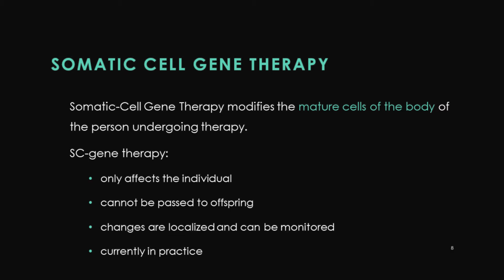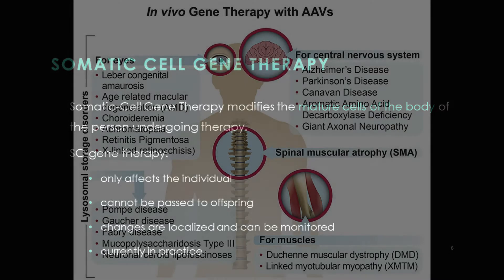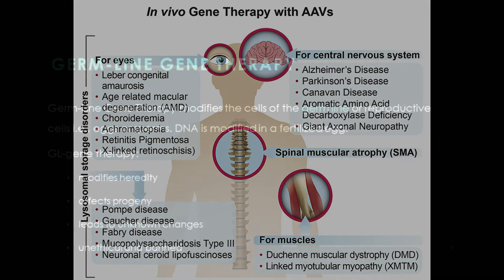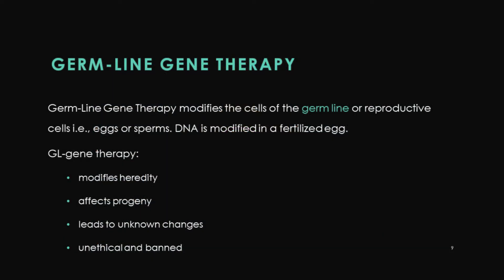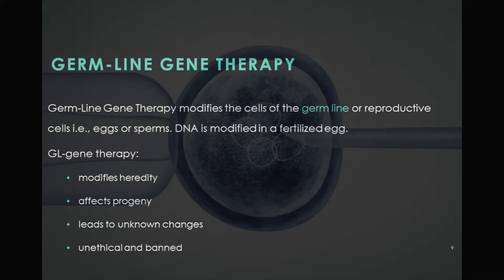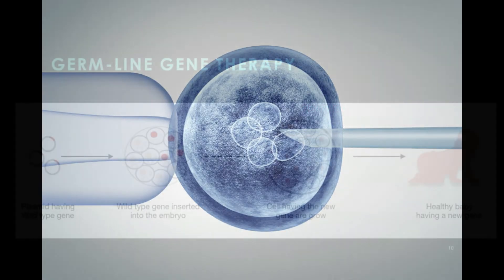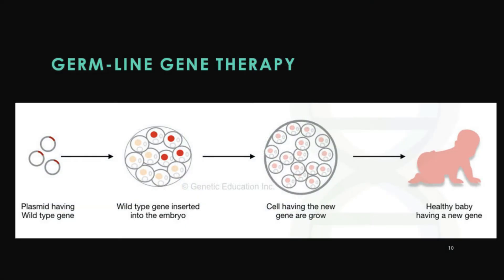Somatic cell therapy is currently under practice and is widely used — we will look at some examples later in the lecture. In contrast, germline therapy makes changes to the germline or reproductive cells, so the gene is carried on to your offspring and then to their offspring.